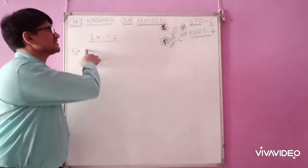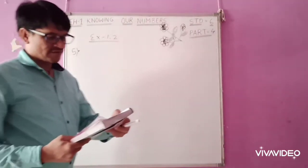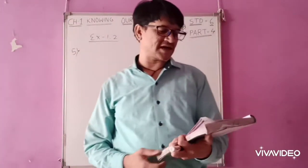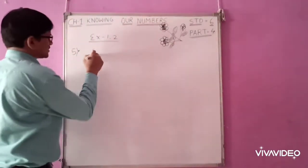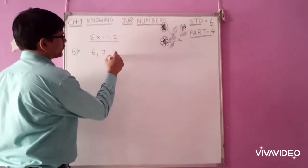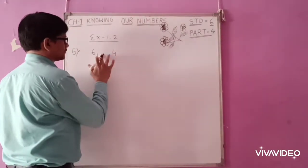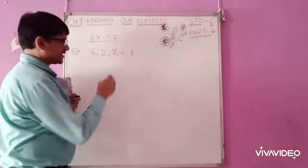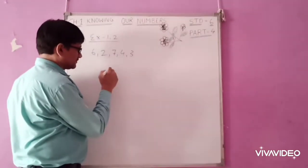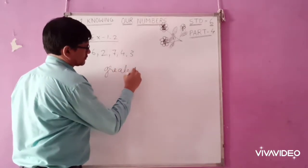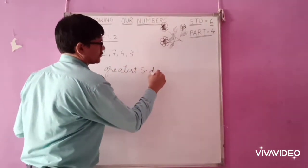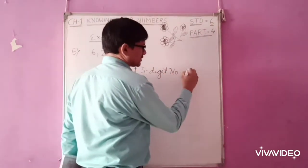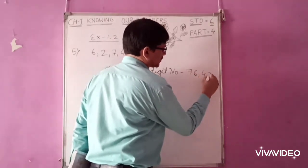Now, we were discussing exercise 1.2, question number 5. Find the difference between the greatest and the least 5 digit number that can be formed using 6, 2, 7, 4, 3. So, greatest number, 5 digit number that can be formed is 7, 6, 4, 3, 2.